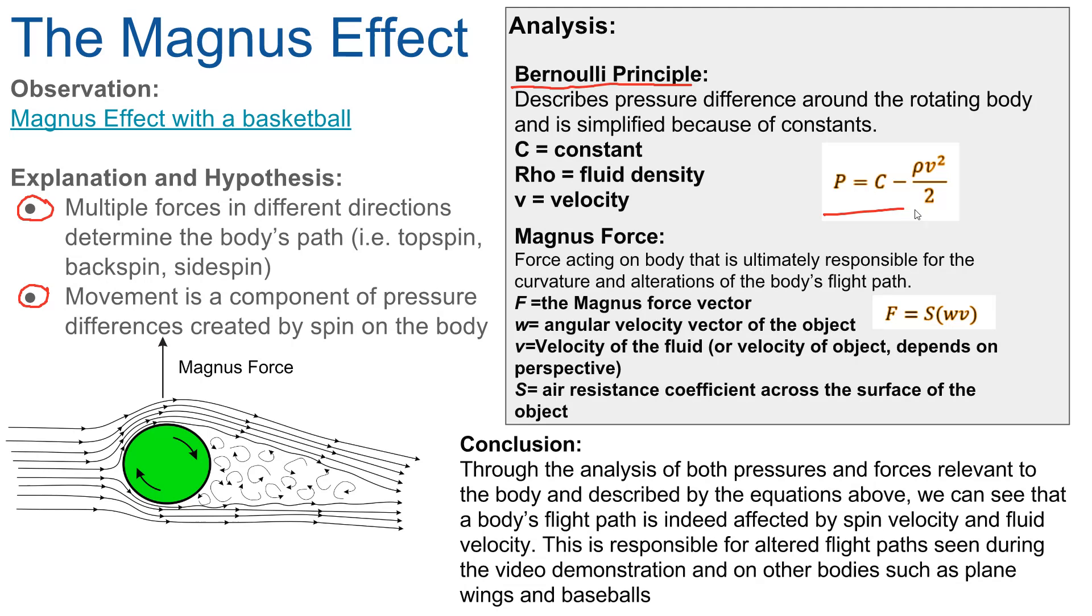You will see based off the image that the air flowing above and below the body cover different distances in the same amount of time. This makes the air flowing above the body move faster than the air flowing beneath the body. Thus, there is a greater pressure beneath the body than above it.